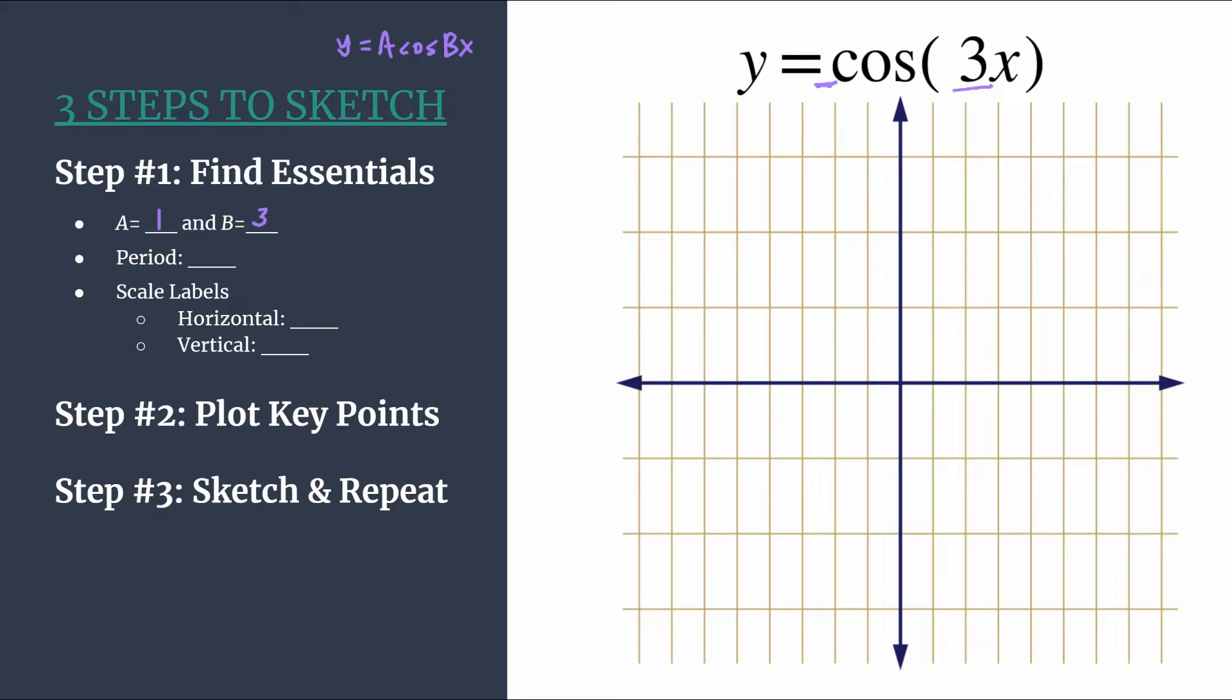b also helps us find our period, so to find the period you simply calculate 2π divided by b, so 2π divided by 3 or 2π over 3 is our period. That's the length of one horizontal cycle.